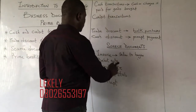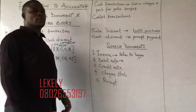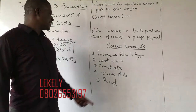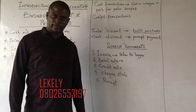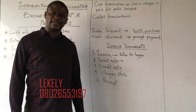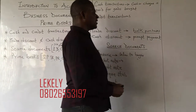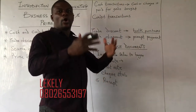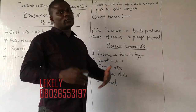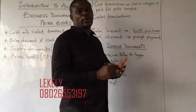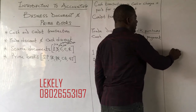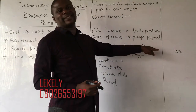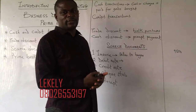Debit notes is that note sent by the seller to the buyer to show that the buyer has been undercharged. For example, if I sent an invoice to you and I was supposed to calculate 10,000 but calculated 9,500, I have made a mistake of undercharging you by 500.